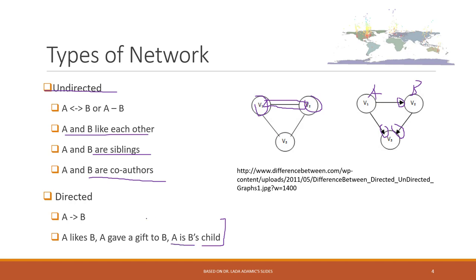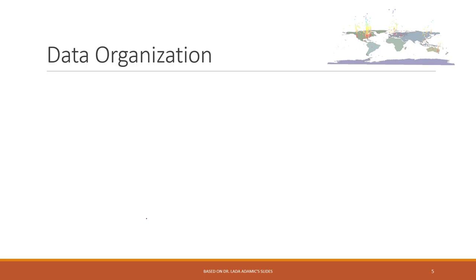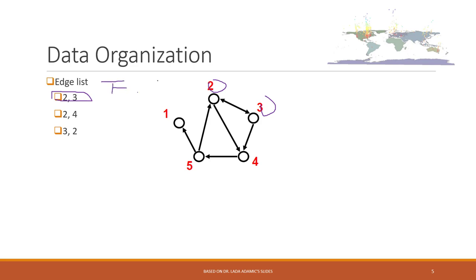How can we organize the data for network data? For example, here we have five nodes and this is a directed network. There are multiple ways that we can store the data. First, we can use an edge list. For example, we have an edge between two and three, so we have a 'from' node and a 'to' node: two and three, three and two, two and four, and so on. We can store such edge lists in a relational database.